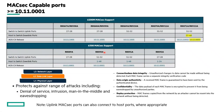First up, for MACsec capable ports, you can see what we've done with the 6200M with the 10.12 release. We've extended support not only to the uplink ports — which is pretty typical — but we also now support host-to-switch downlink ports with MACsec on the smart rate ports 37 through 48. As a comparison, the 6300 has a lot more port counts available for downlink ports.